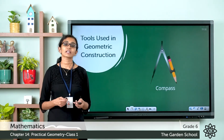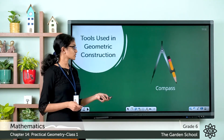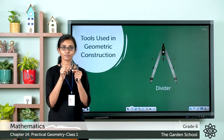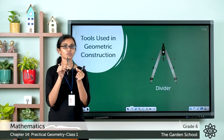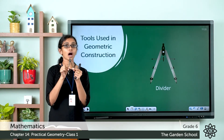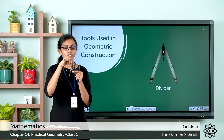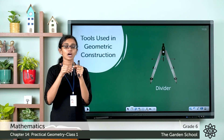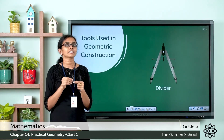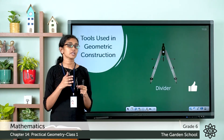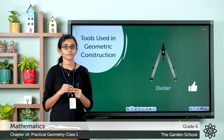The next tool in your geometry box is called a divider. It is similar to a compass, except it does not have a hold for a pencil. Instead, it has two arms which are movable about a hinge, and both arms have sharp pointed edges. We use a divider to scribe circles, take off and transfer measurements, and to compare measurements.